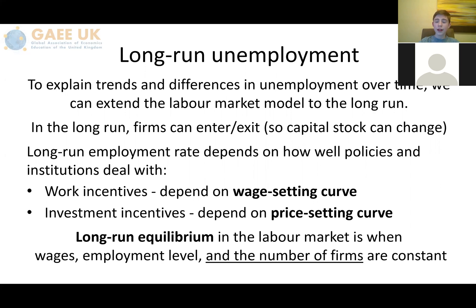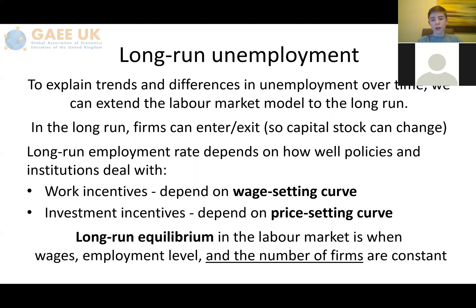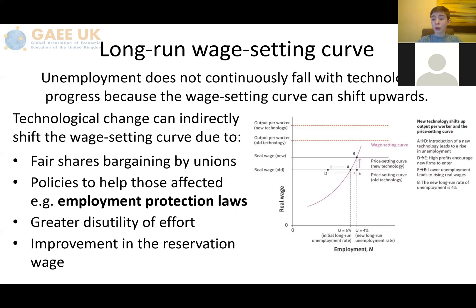In order to explain trends and differences in unemployment over time, we can extend the labour market model to the long run. In the long run, firms can enter or exit the market, so capital stock can change. The long-run employment rate depends on how well policies and institutions deal with work incentives and investment incentives concurrently. The long-run equilibrium in the labour market is when wages, employment level, and the number of firms are constant. I'll just pause to let you absorb the next two slides, as it's important to understand one of the more fundamental principles of the impact of technological change through the long-run wage-setting curve.